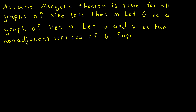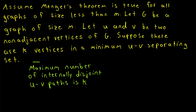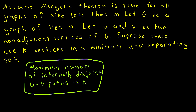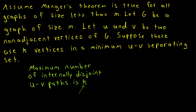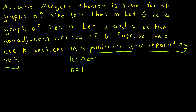We'll suppose that the number of vertices in a minimum u-v separating set is K. So we're supposing that a minimum of K vertices need to be deleted to separate u and v, and we need to prove that the maximum number of internally disjoint u-v paths is also K. We know the result is true for K equals 0: if there are zero vertices in a minimum u-v separating set, then u and v are already disconnected, so there are also zero internally disjoint paths connecting them. Thus the theorem always holds if K equals 0.